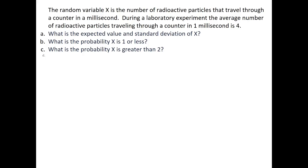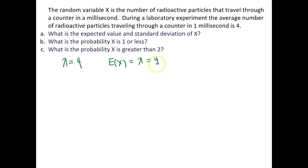In this example, we're going to solve probabilities for a random variable with a Poisson distribution. The random variable x is the number of radioactive particles that travel through a counter in a millisecond. During a laboratory experiment, the average number of particles per millisecond is four, so the rate parameter lambda equals four. Since this is a Poisson distribution — a discrete random variable with a rate parameter representing successes over time — the expected value equals lambda, which is four.